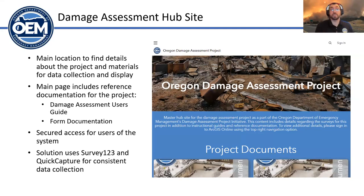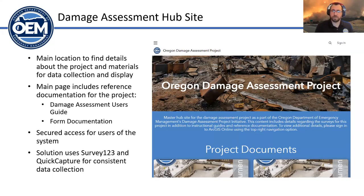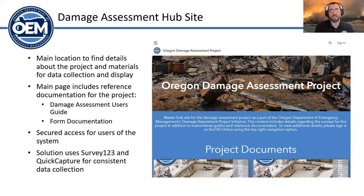The hub site is a public-facing landing page where folks can go to view user guide documentation. It also provides behind-the-scenes access that folks can sign into for additional details. For this solution, we're utilizing Survey123 and QuickCapture for consistent data collection. On the back end, we're using hub site pages and dashboards to visualize that information, along with some Quick Apps, which I'll show as we walk through the page.